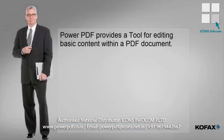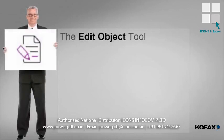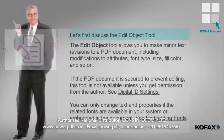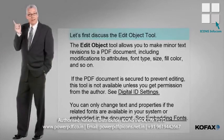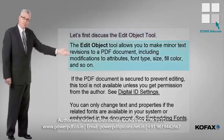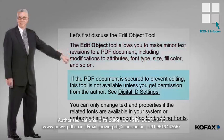Power PDF provides a tool for editing basic content within a PDF document. The Edit Object tool allows you to make minor text revisions to a PDF document, including modifications to attributes, font type, size, fill color, and so on. If the PDF document is secure to prevent editing, this tool is not available unless you get permission from the author.